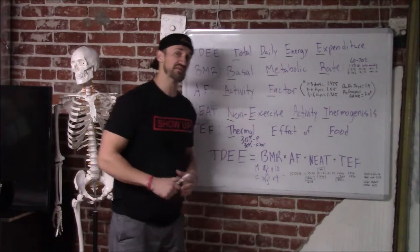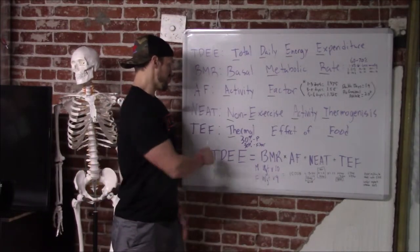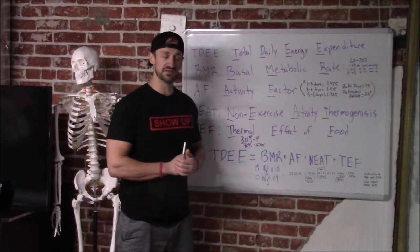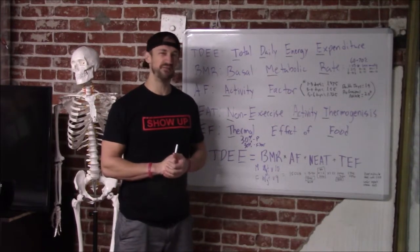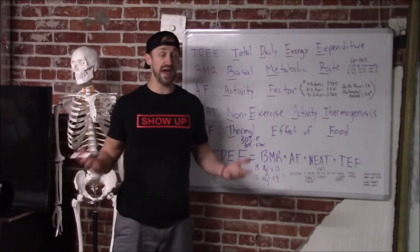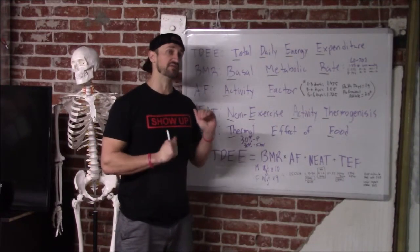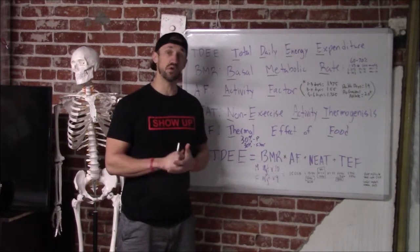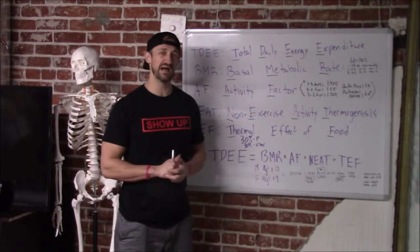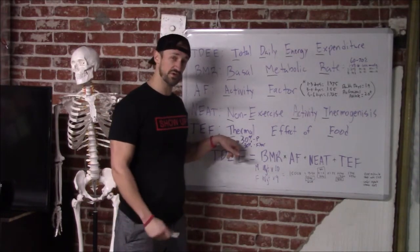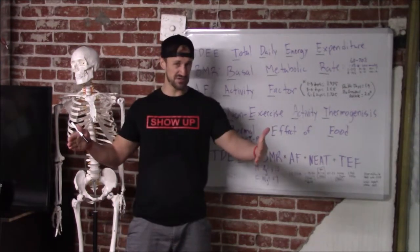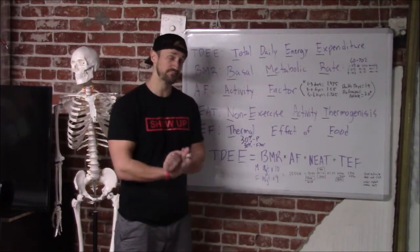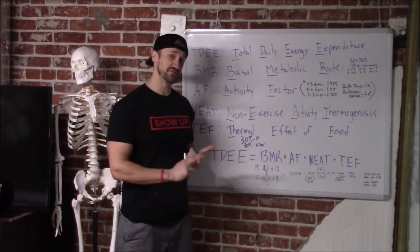Last but not least is thermal effect of food, which is thermogenesis — your body heating itself up to burn calories. As a nation, we're consuming about 50 to 60% of our diet in carbohydrates. Carbs aren't bad, but they don't take as much energy to break down. Fiber has a higher thermal effect of food at 30%, and so does protein. On average, you're looking at about 10% thermogenesis. You can change that in your favor and burn more calories by consuming more protein — whether animal product or not — and also more fiber.